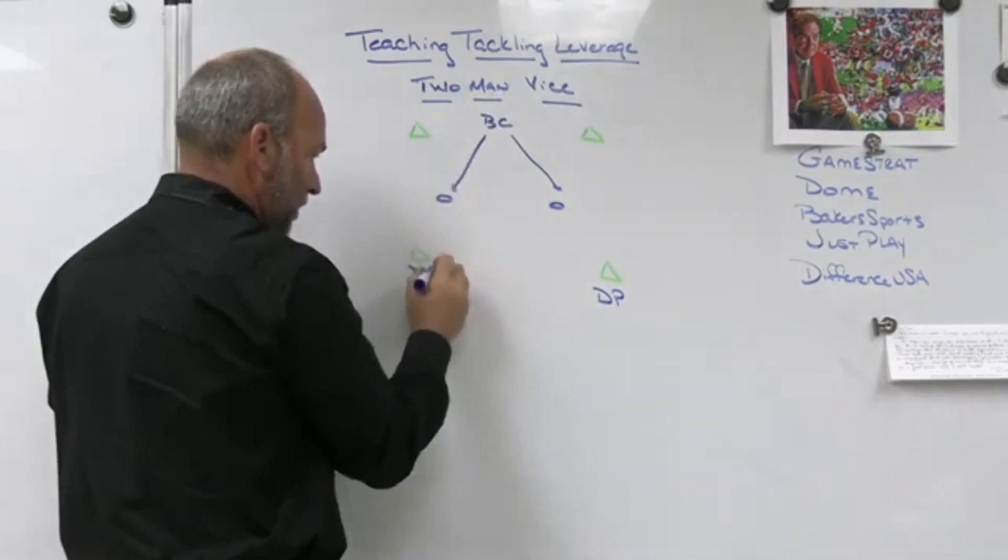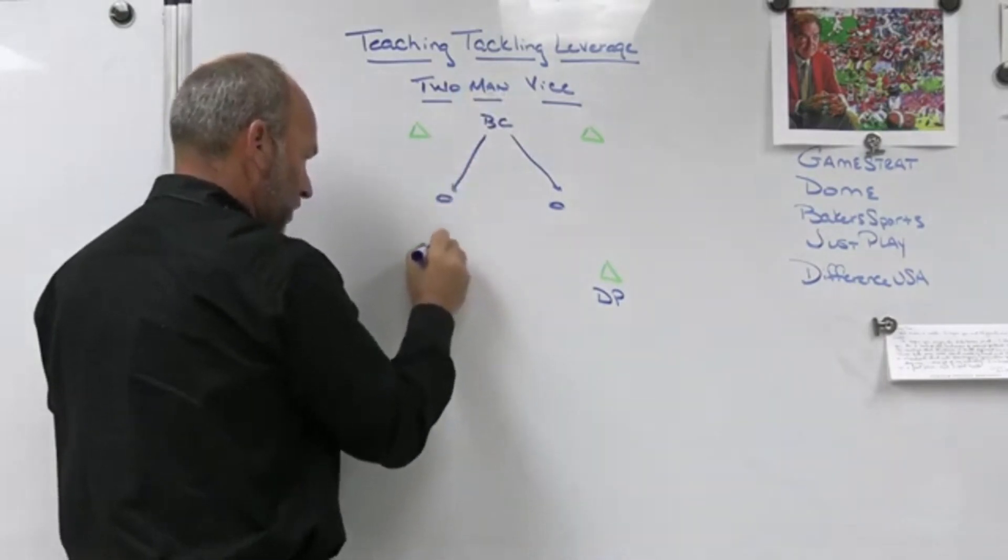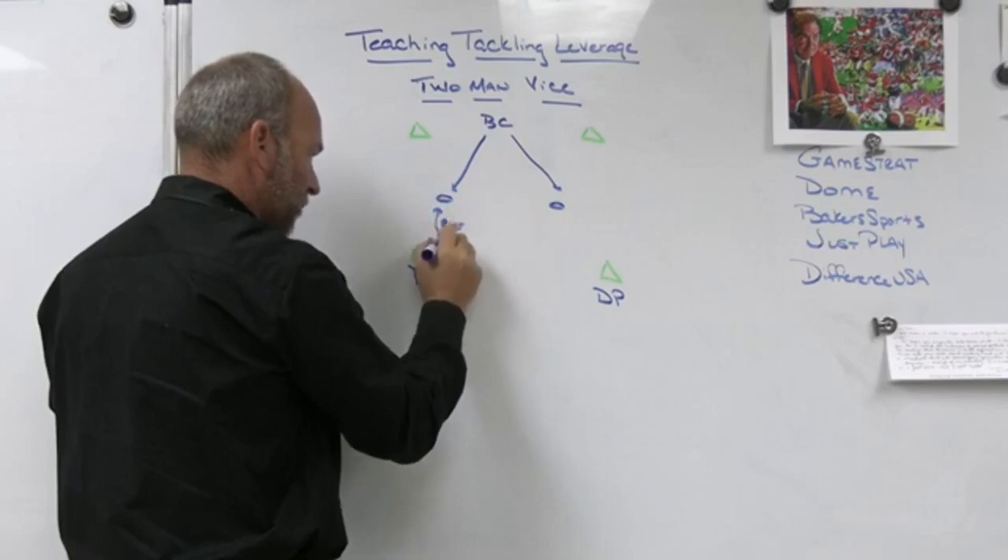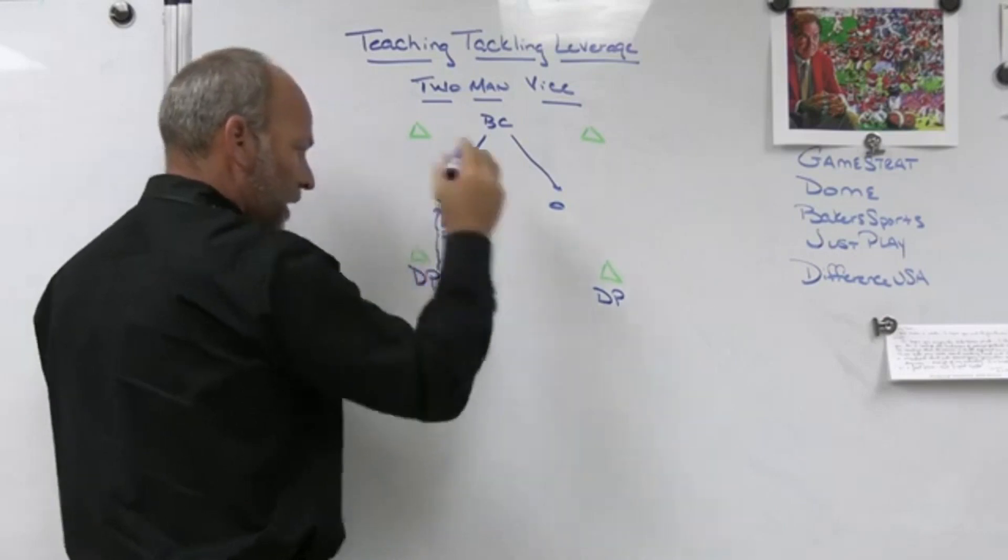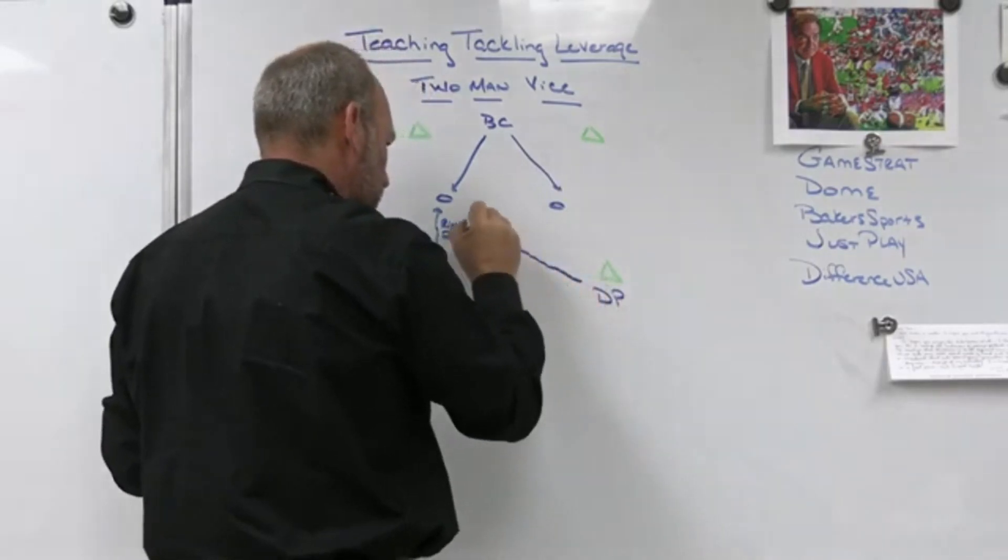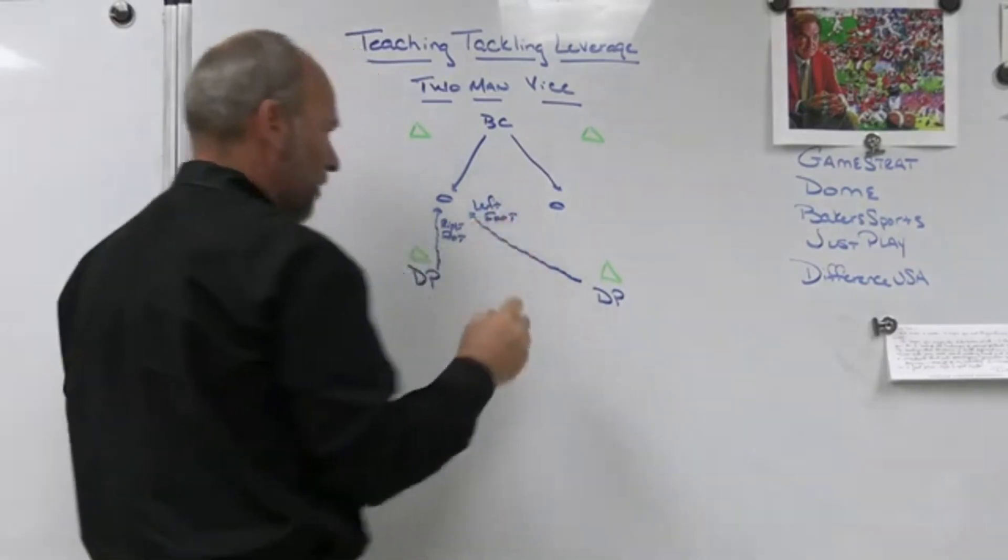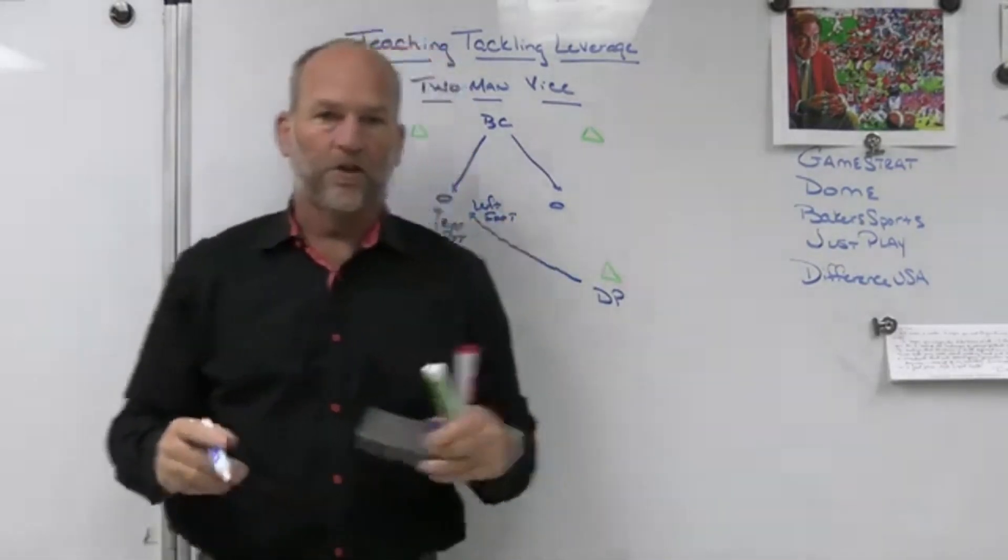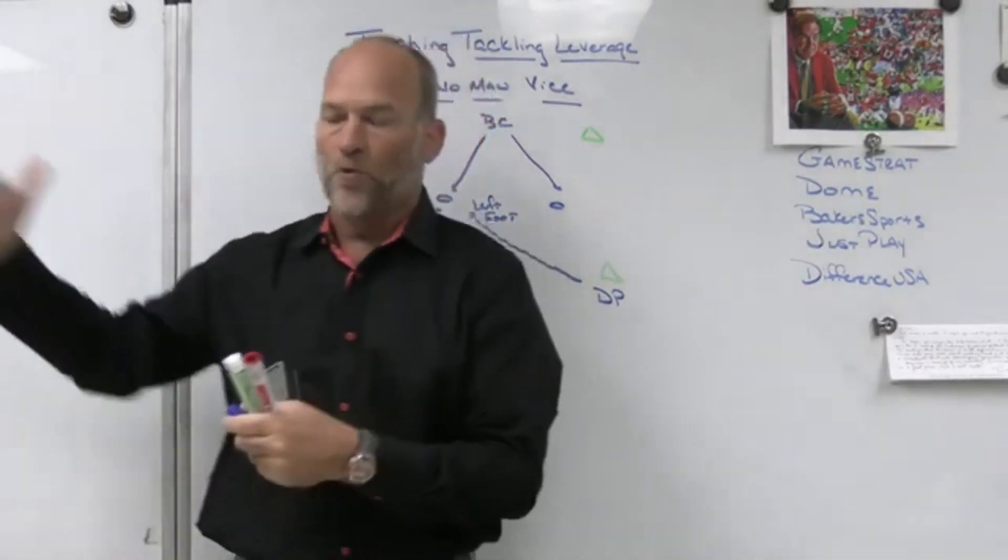So if the ball carrier came at me, I'm sprinting to close and this should be a right foot shimmy. And now my partner is sprinting to close and he should end up with a left foot shimmy. And what that does is it teaches us how to leverage the ball back to where our help is.